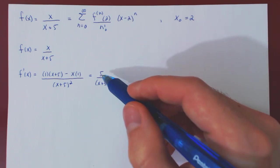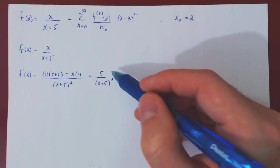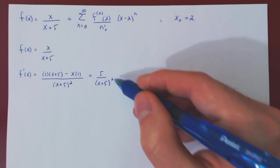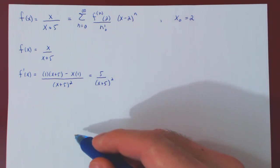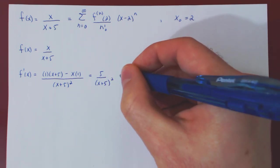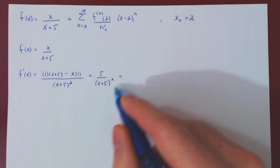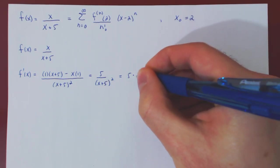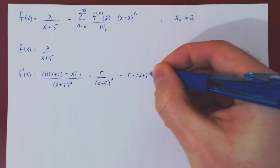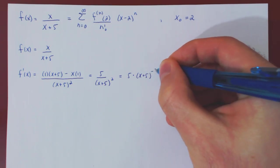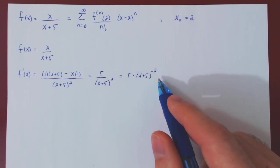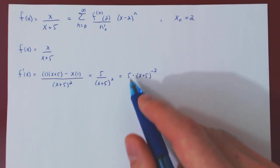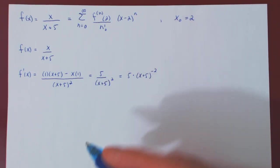It's worth noticing that even though we have a quotient, the numerator is a constant. So let's not differentiate again using the quotient rule, but instead write this as 5 times x plus 5 to the negative 2. Now differentiating this will require only the power rule, which will be simpler than using the quotient rule.